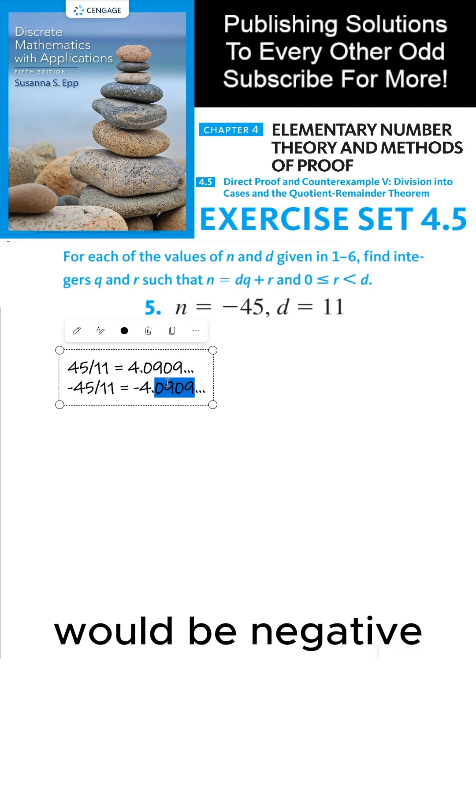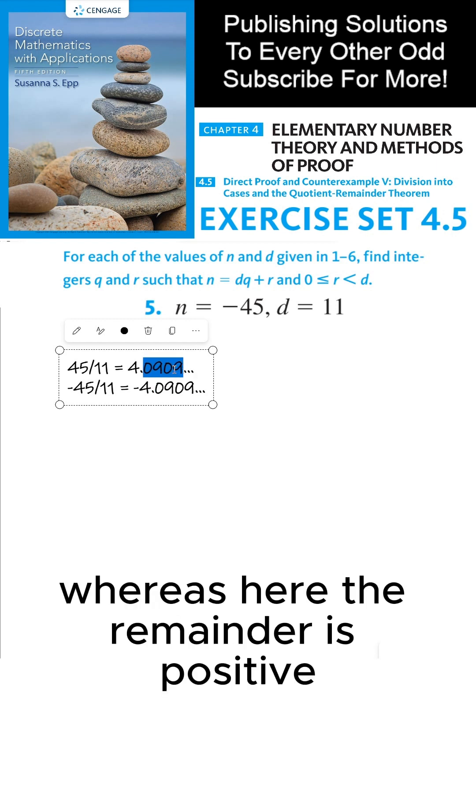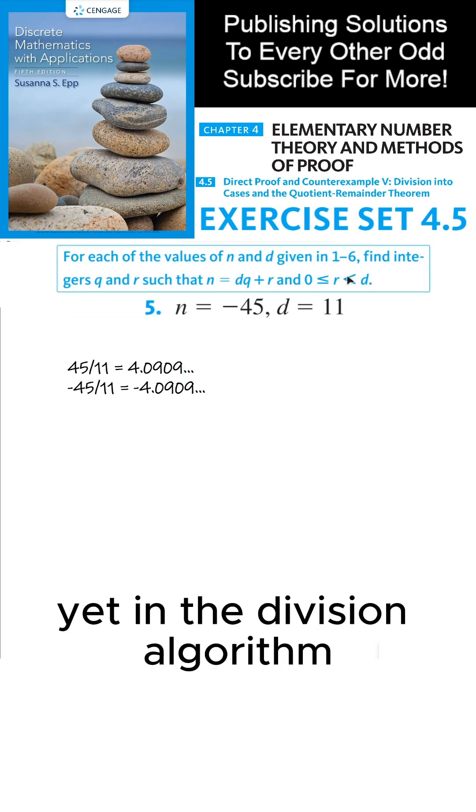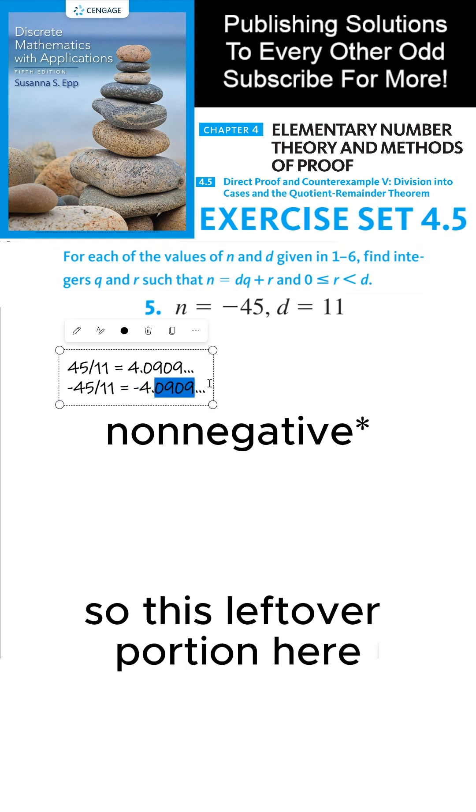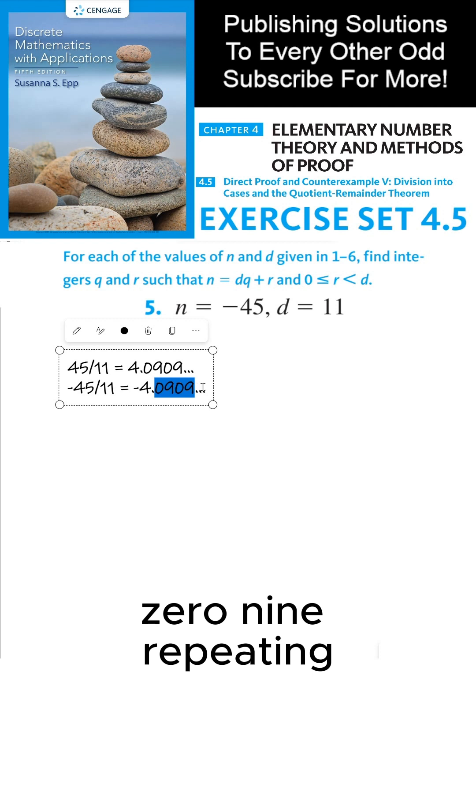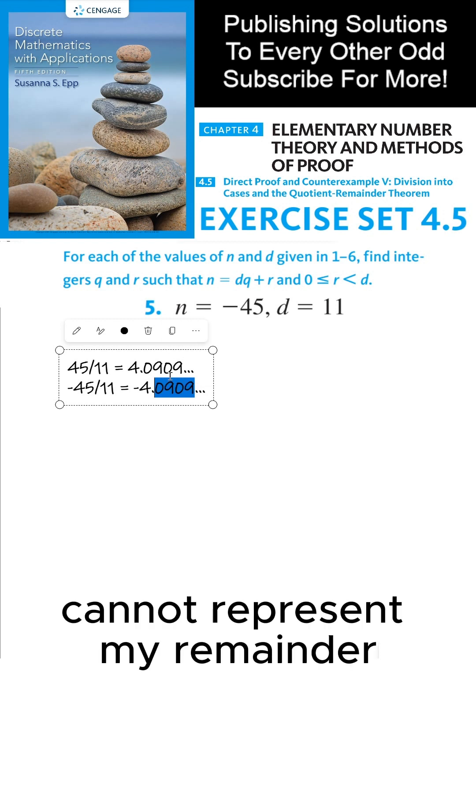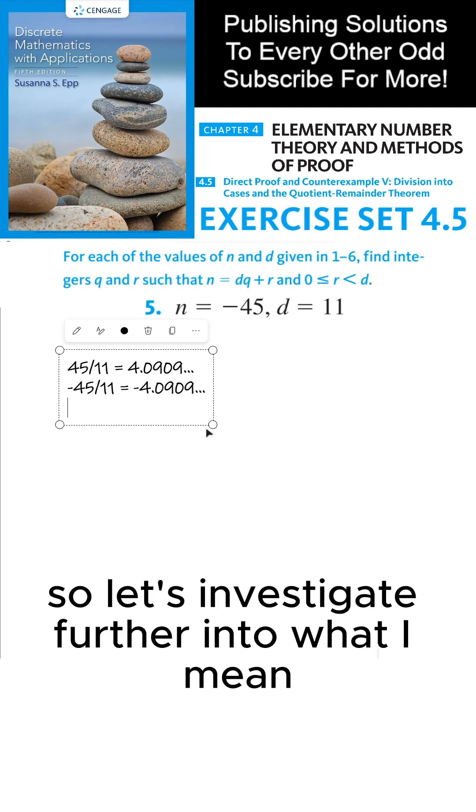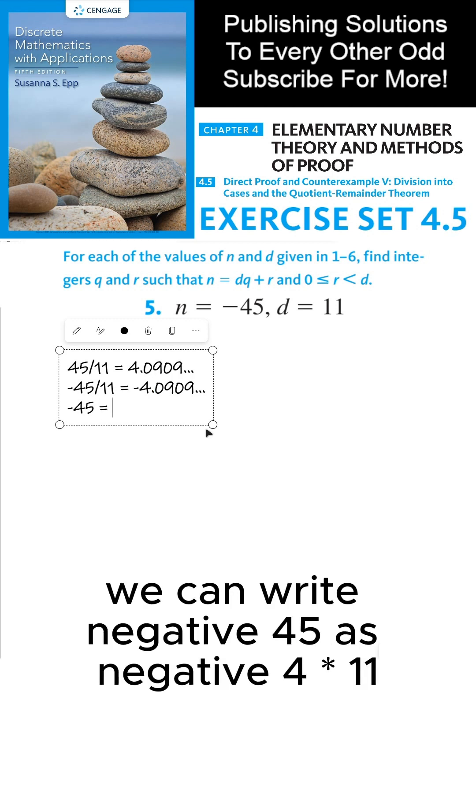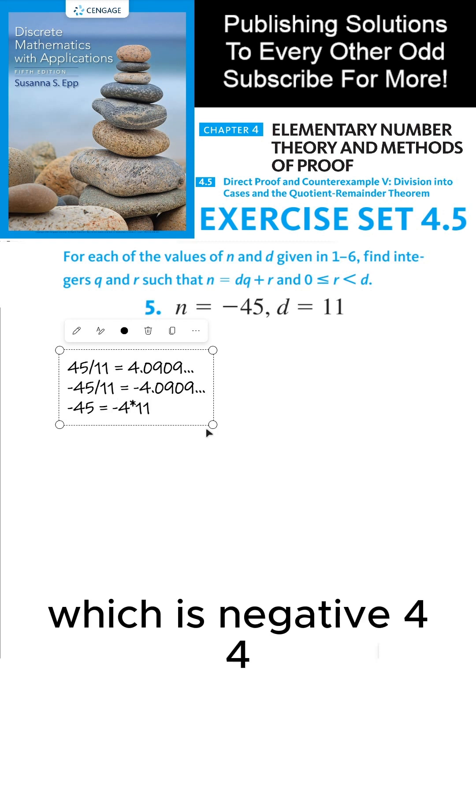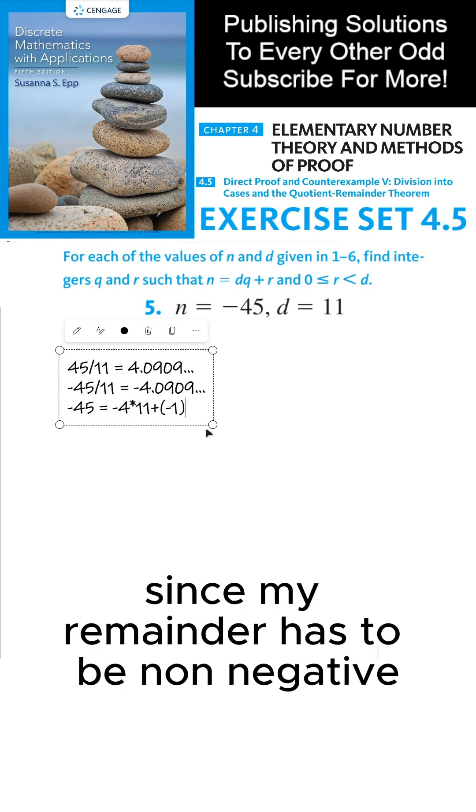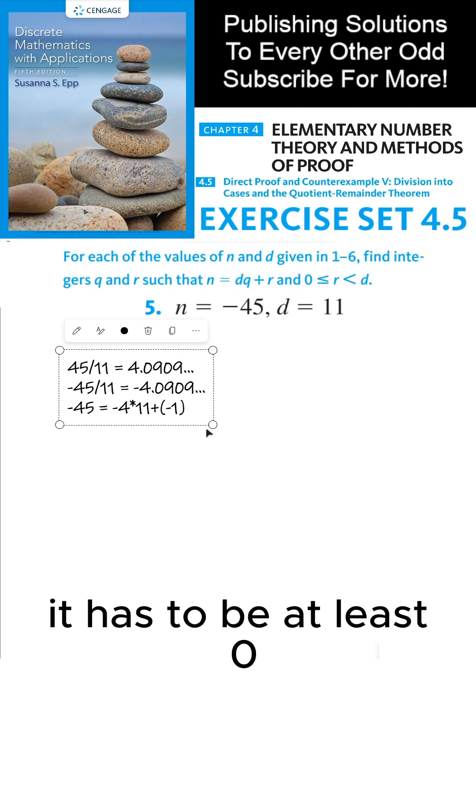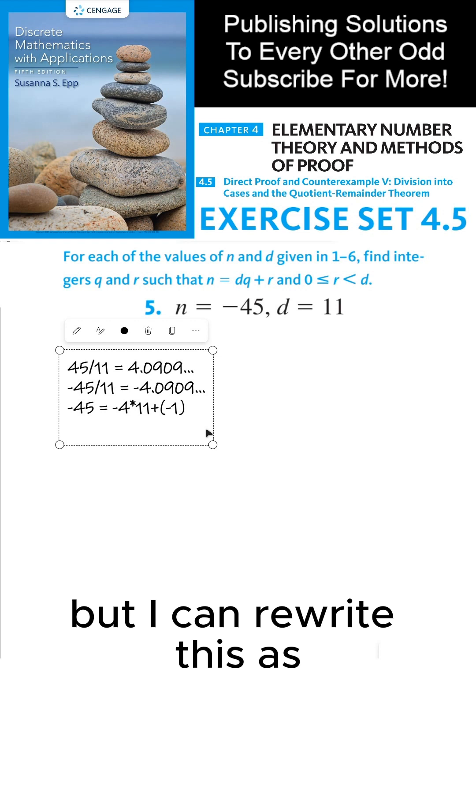In the division algorithm we require that the remainder be positive, so this leftover portion cannot represent my remainder because of this negative symbol. We can write negative 45 as negative 4 times 11, which is negative 44, but then my remainder would be negative 1, which is not allowed since my remainder has to be non-negative, at least zero.